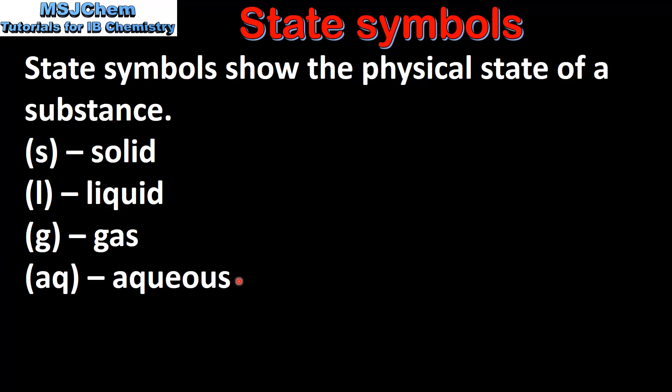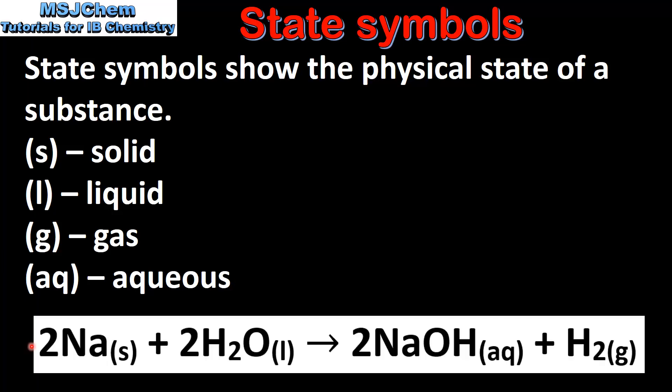AQ is used for solutions formed by dissolving a solid in a liquid. So here we have an example of a chemical reaction that involves all four state symbols. In the reaction solid sodium reacts with water which is a liquid to form an aqueous solution of sodium hydroxide and hydrogen gas.